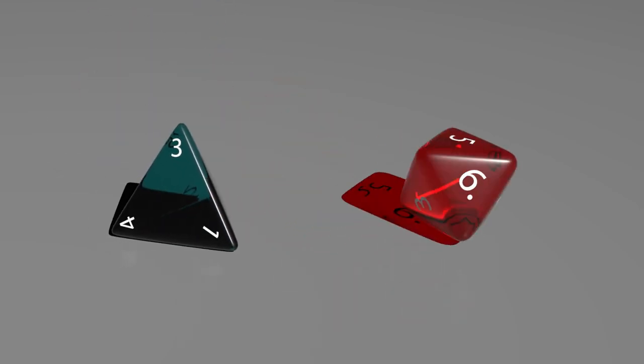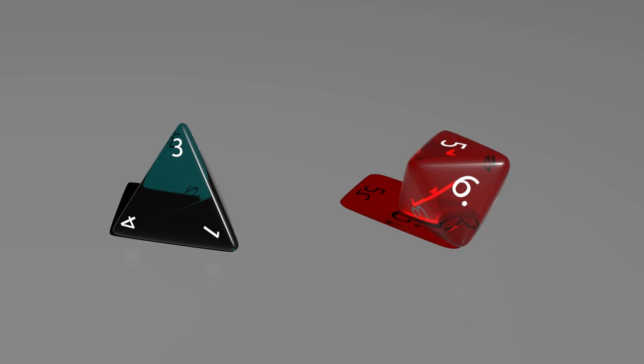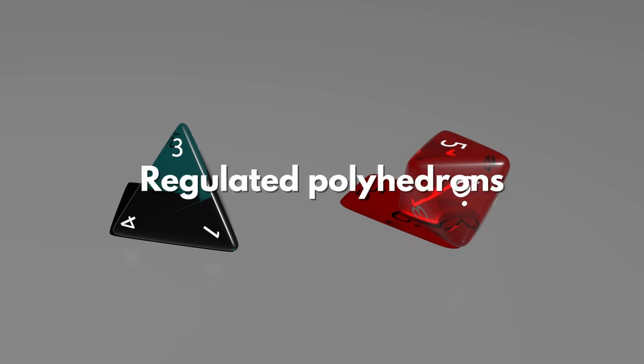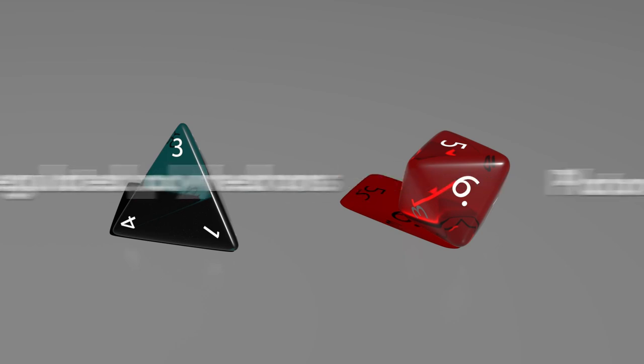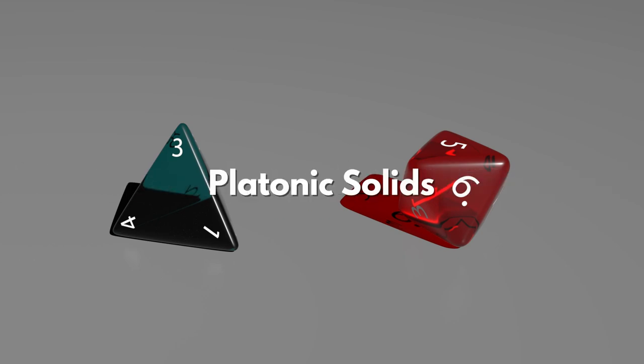Here we can see some of them, a four-face dice and an eight-face dice. All dice are regulated polyhedrons, also named platonic solids, but let's meet the first of the family of regulated polyhedrons.